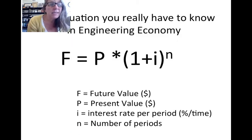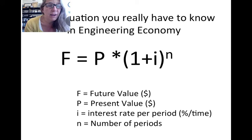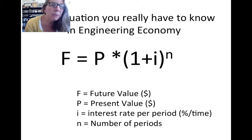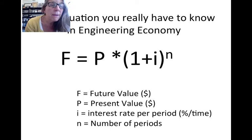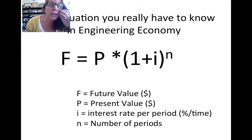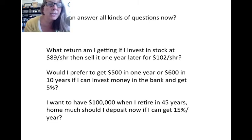This leads us to really the only equation you'll ever need in engineering economy: F, the future value, equals P, the present value, times one plus the interest rate to the power of n. In the problem we just did, it was 80 times 1.05 squared, which equals $88.20. That's really the only concept you need.